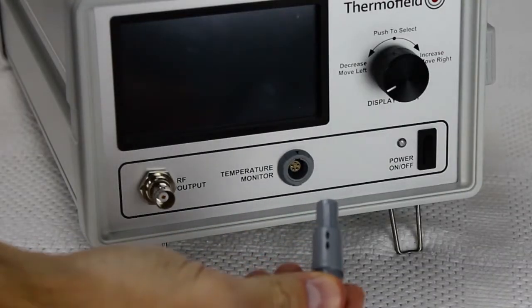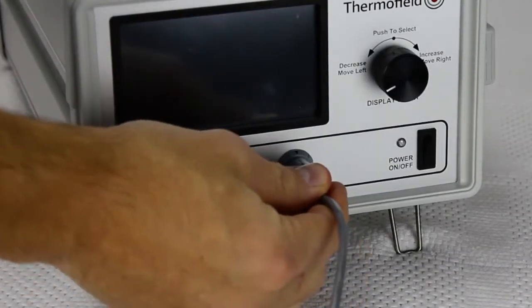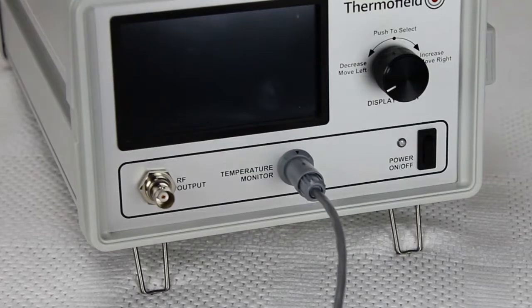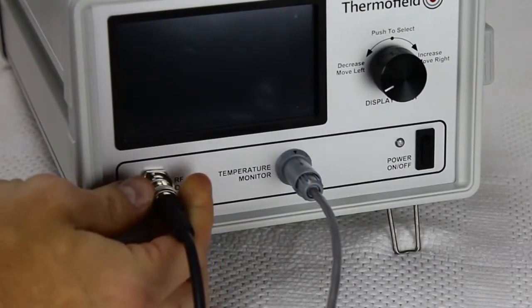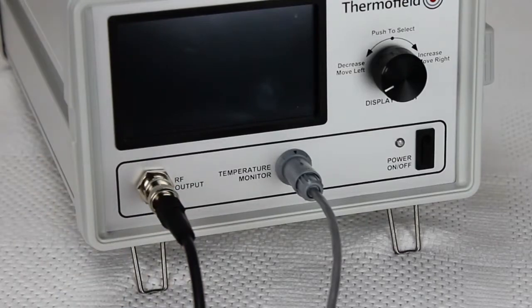Connect the gray cord to the temperature monitor input, lining up the arrows to plug it in correctly. Connect the black cord to the RF output. Twist the tip to snap it into place.